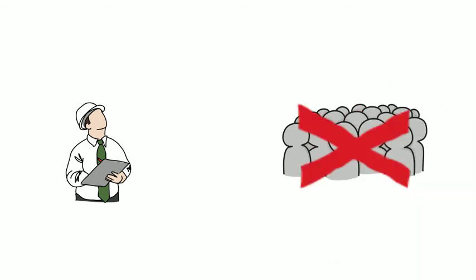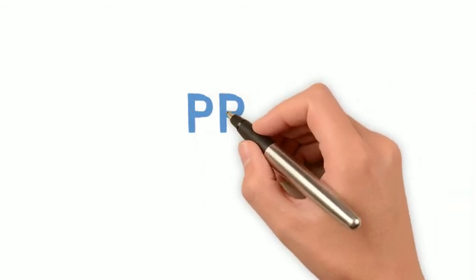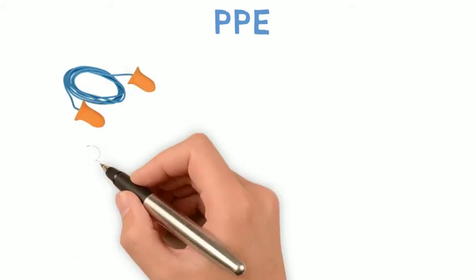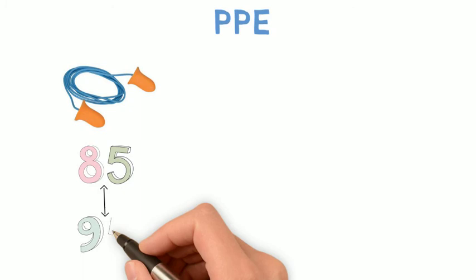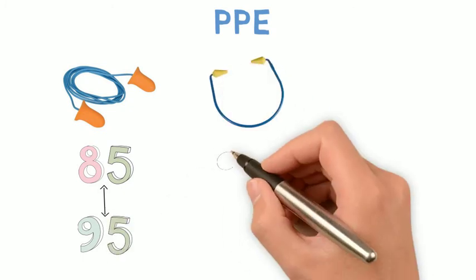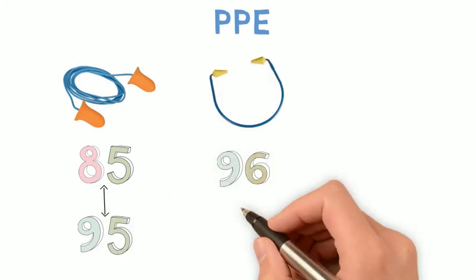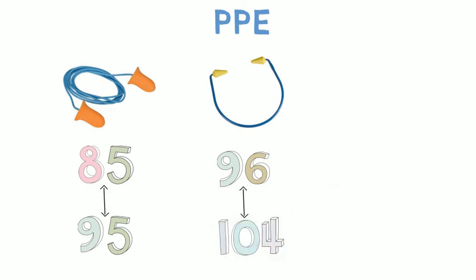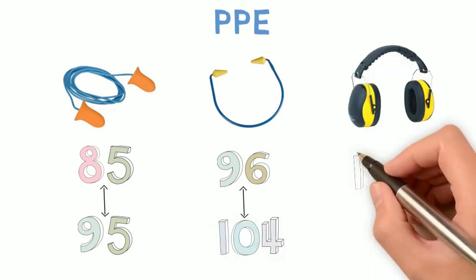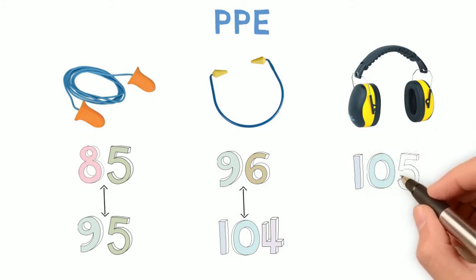Personal protection equipment remains the most effective way to prevent noise-induced hearing loss. Ear plugs should be used when site noise levels are between 85 to 95 decibels. Ear caps should be used when noise levels are 96 to 104 decibels. Noise-canceling ear muffs should be used for any work that generates noise above 105 decibels.